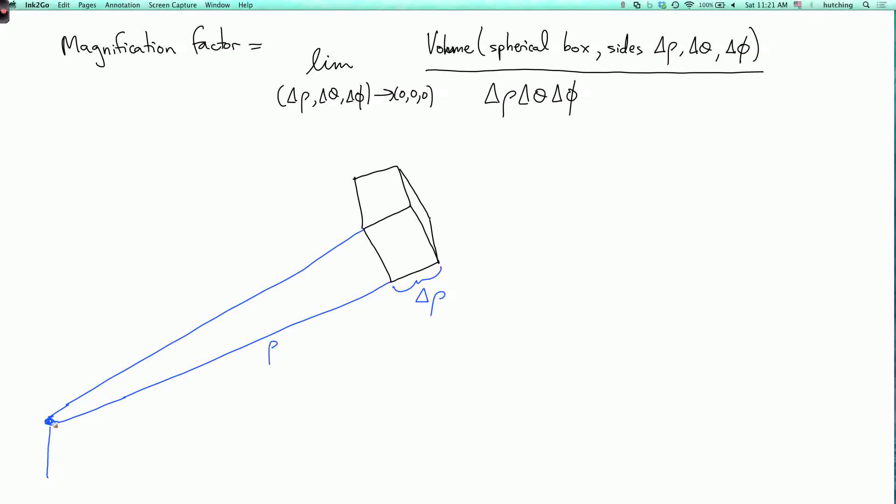Now the z-axis is up here, and we're making an angle of phi with the z-axis. Now this side of the box comes from varying phi. And since we're at a distance of rho from the origin, its length is not delta phi, but it's rho times delta phi.